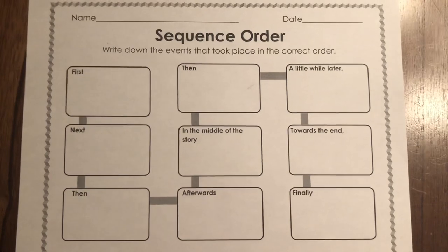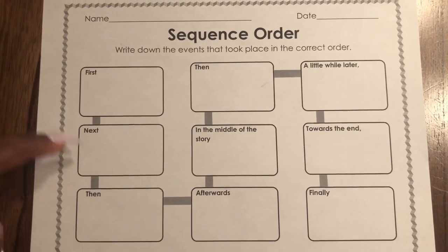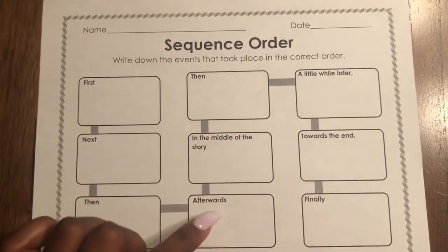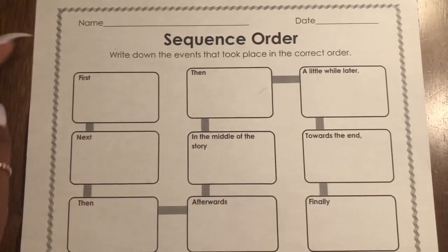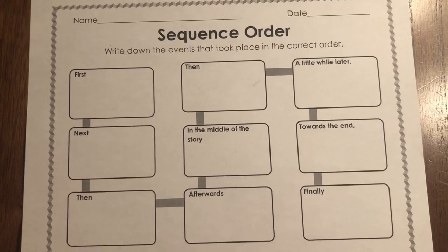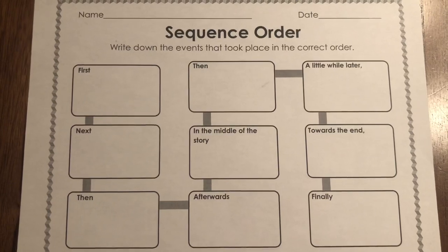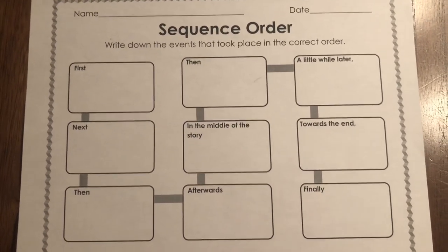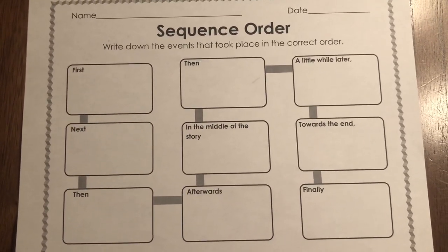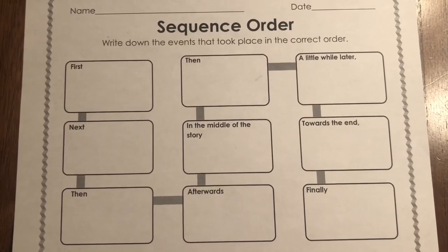Timelines are typically for informational text because informational text gives you a history of something and you'll use the timeline to put in dates in the order things happened. But you can also do sequence order for literary texts. Now I'm going to show you another type of graphic organizer you can use for literary text. This graphic organizer is especially good if you have to write a summary because it gives you the words: first, next, then, in the middle of the story, afterwards, a little while later, towards the end, and finally.